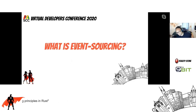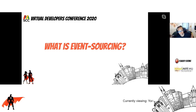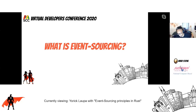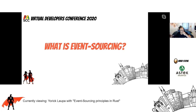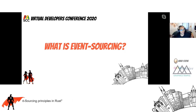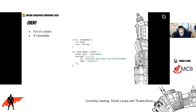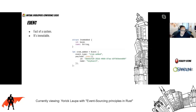So what is event sourcing? In order to answer that question, I propose to first introduce some keywords we're going to need to go forward. First, we need to talk about what an event is. An event is a fact of a system that happened at some time. An event's data is immutable, but an event does not have to comply to a specific template. However, we will usually recommend to have at least three key properties.